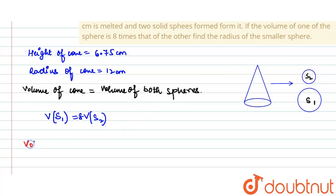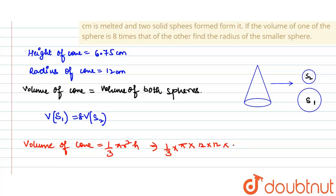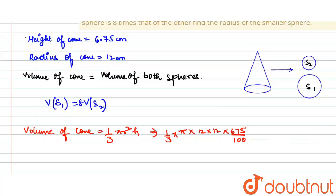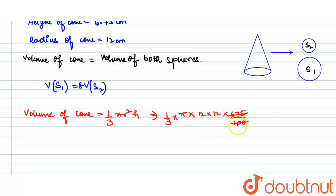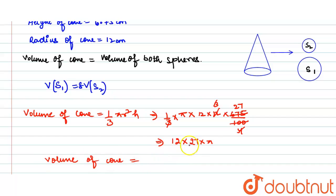Volume of cone is given by (1/3)πr²h. With radius = 12 cm and height = 6.75 cm, we write 6.75 as 675/100. Simplifying: (1/3) × π × 12 × 12 × (675/100). Dividing 675 by 25 gives 27, and 100 by 25 gives 4. The 4 and 3 partially cancel, leaving 12 × 12 × 27 × π. So volume of cone = 12 × 27 × 12 × π.